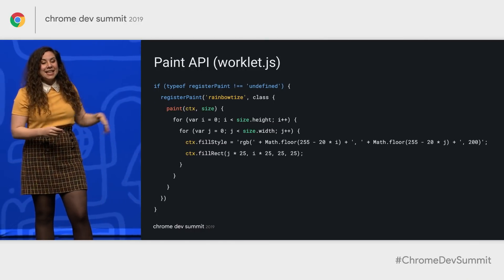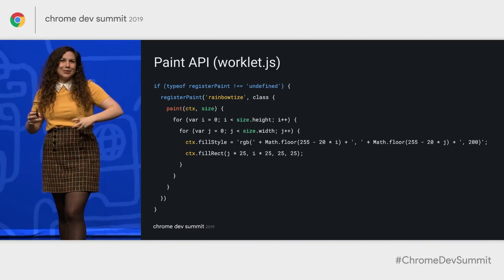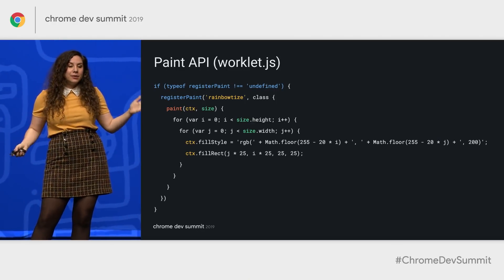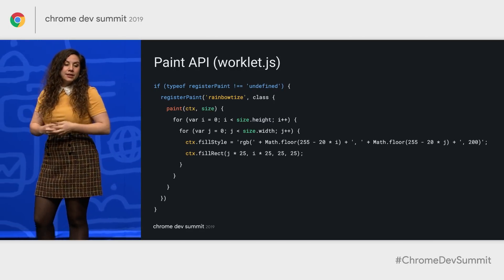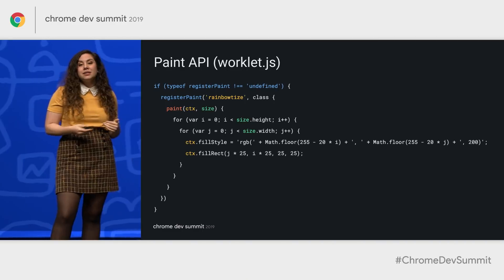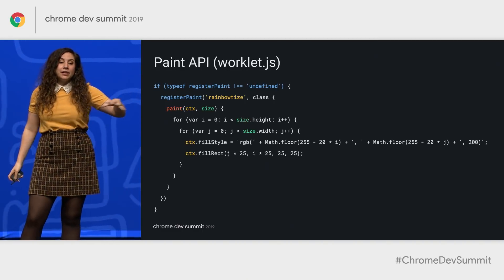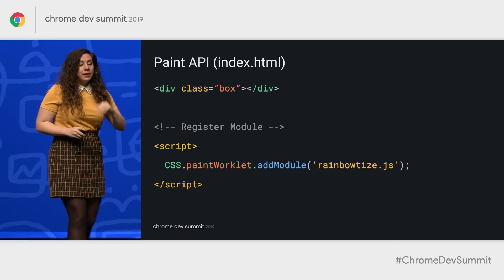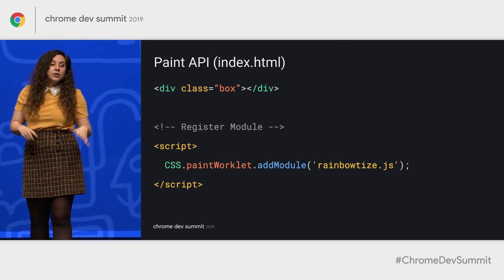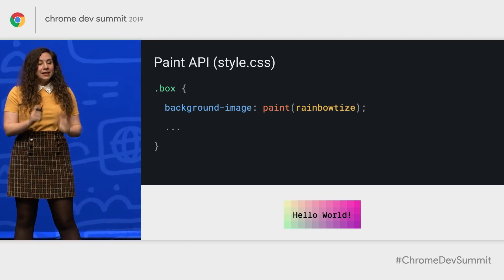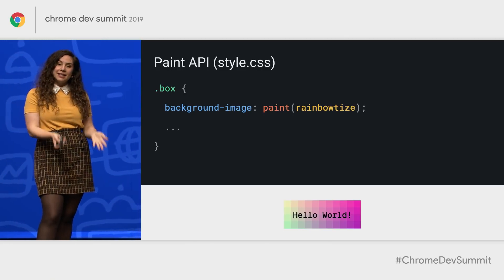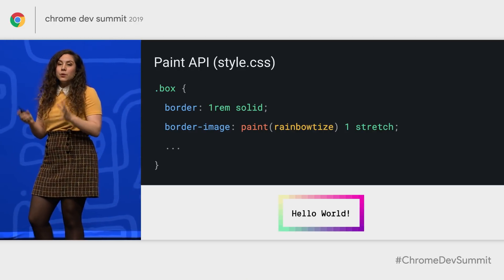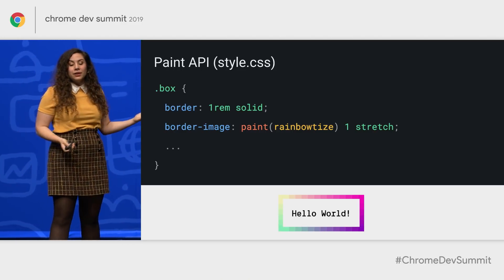Here's an example of a pixel-art rainbow worklet painting colors on an element. I'm checking for support by saying if typeof registerPaint is not undefined, then writing the worklet with registerPaint and a name, pulling in the context and size of the elements I'm applying the worklet to. In the HTML we have the class box and we add the worklet to the CSS interface. In CSS all I write is background-image: paint(rainbow-ties). It doesn't only have to be a background image — I can also use this as a border-image with that exact same worklet logic, applying it as a border for a very different effect.